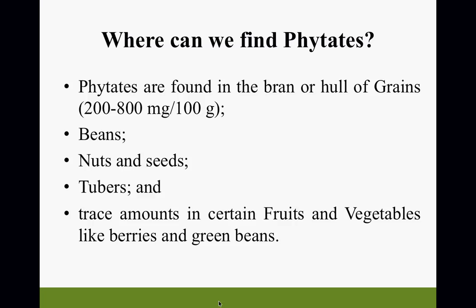Where can we find phytates? Phytates are found in the bran or hull of grains — roughly between 200 to 800 milligrams per 100 edible grams — in beans, nuts, seeds, provisions (that's your tubers), and trace amounts in certain fruits and vegetables like berries and green beans.